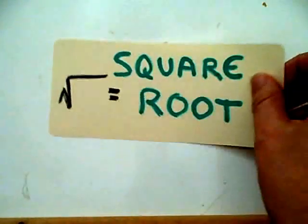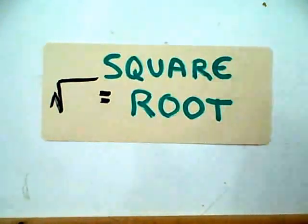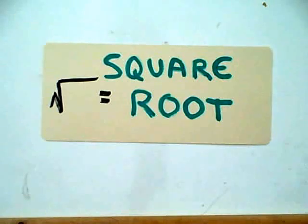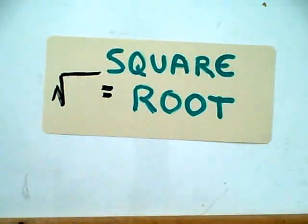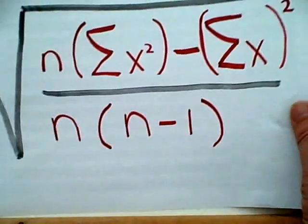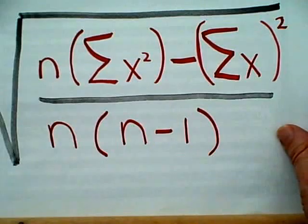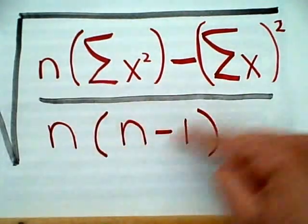So, there's that square root sign. We know what that means, and what's going to appear under that square root sign is going to be something known as the variance, and what we're going to do is square root that, and that is our standard deviation. Now, the equation that we started out with has the letter N here, here, and here.